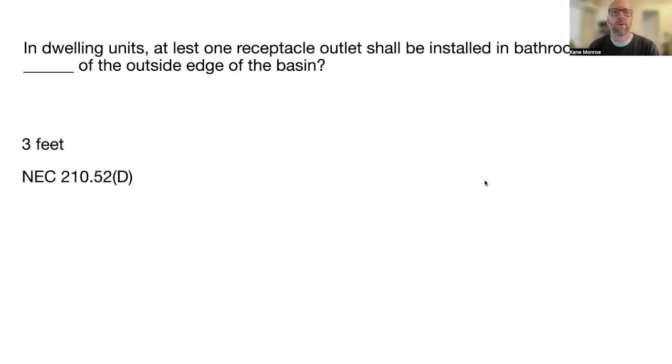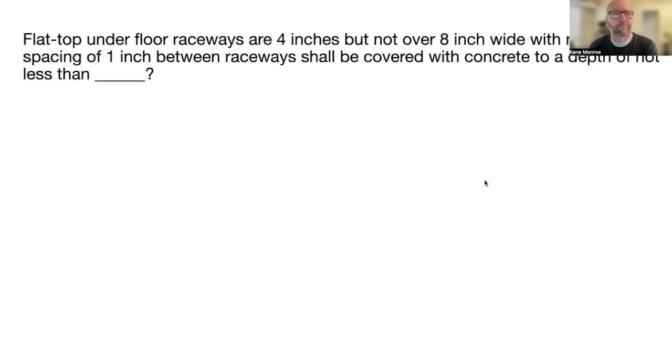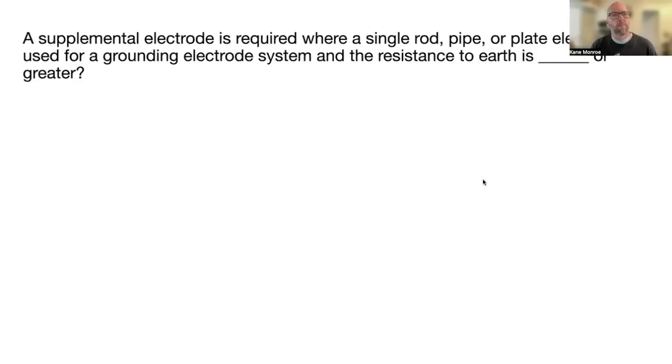Flat top underfloor raceways that are four inches but not over eight inches wide with a minimum spacing of one inch between the raceways shall be covered with concrete to a depth of not less than one inch. 390.15b, so they gotta have more than an inch of concrete on top of them.